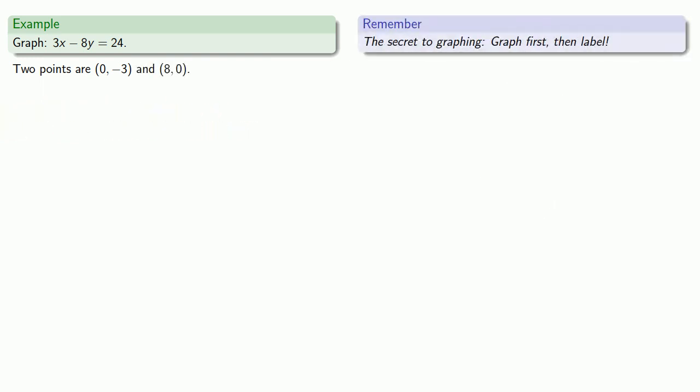Again, the secret to graphing is graph first, then label. This first point, (0, -3), says go down 3 units. We'll start at the origin and go down some distance and declare that it's the correct distance by labeling it. Since we know this is the graph of a straight line, we'll draw the line between the two points and declare that it's correct by writing down the equation.